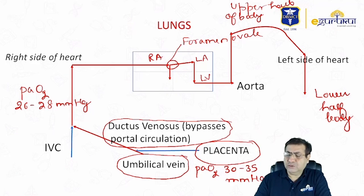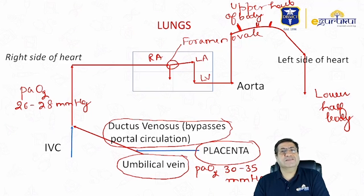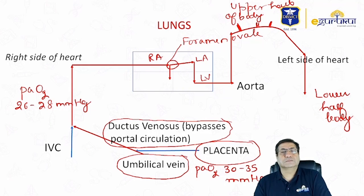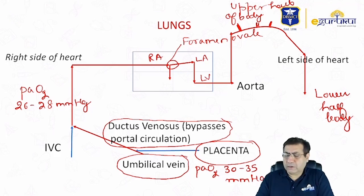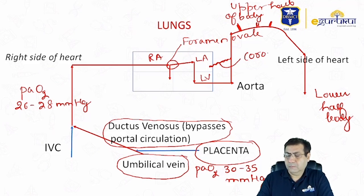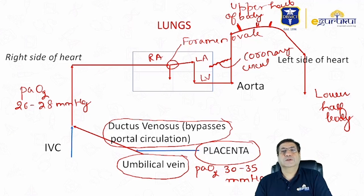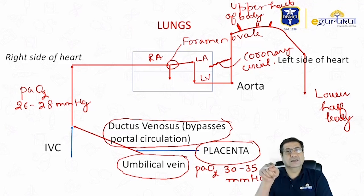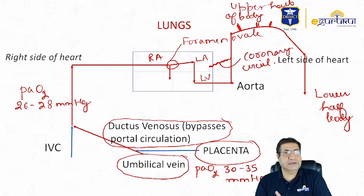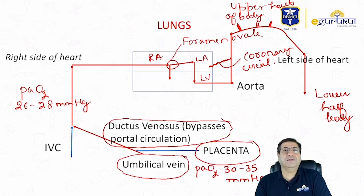From the arch of the aorta arise the brachiocephalic, the carotid, and the left subclavian arteries, so the brain receives oxygenated blood. The coronary circulation also arises from the ascending aorta. Therefore, not only the brain but even the heart receives only oxygenated blood via the left side of the circulation.